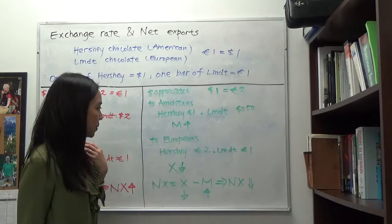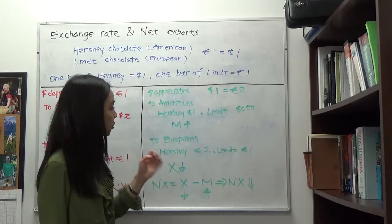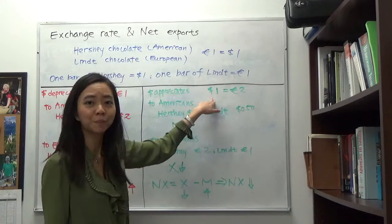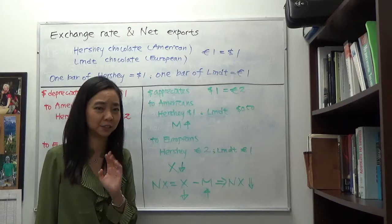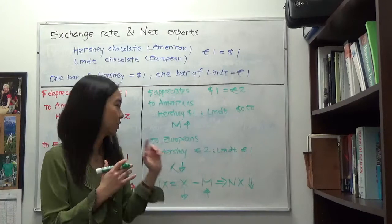How about for Europeans? Lindt chocolate is still one euro. But a bar of Hershey — we know it's still one dollar — now Europeans will have to pay two euros for one dollar. Therefore, for Europeans, Hershey costs two euros. Two euros is relatively expensive, so Europeans will find Hershey relatively unattractive and prefer to buy Lindt. Therefore, the export of Hershey is going to go down.